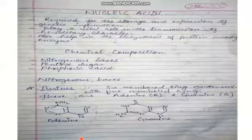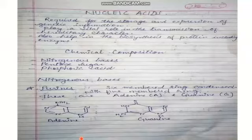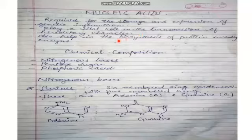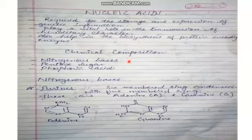Next we will move toward nucleic acids. Nucleic acids are very important polymers present in all living cells. They are required for the storage and expression of genetic information and play a vital role in the transmission of hereditary characters from one generation to another. They also help in the biosynthesis of proteins including enzymes. Nucleic acids are present in DNA and RNA, and their chemical composition includes nitrogenous bases, pentose sugar, and phosphoric acid.